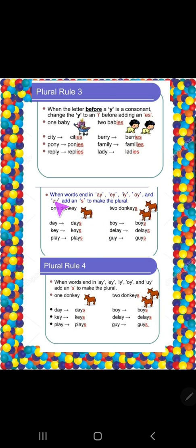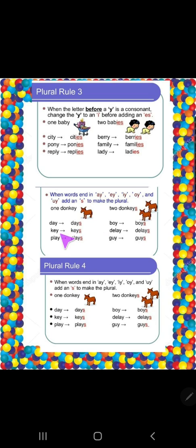Now, when words end in a vowel + y (like ay, ey, iy, oy, uy), just add 's' to make the plural. For example: day → days, key → keys, play → plays, boy → boys, delay → delays, guy → guys.